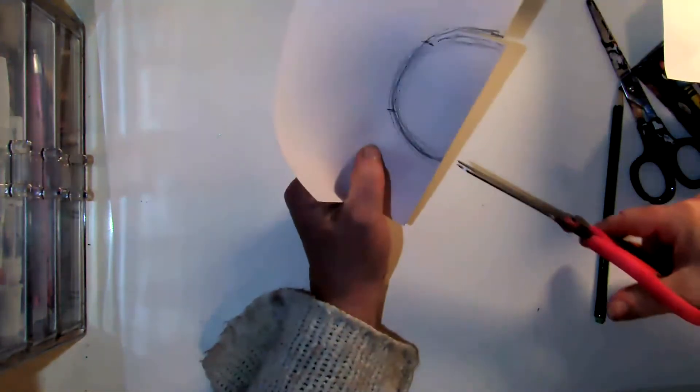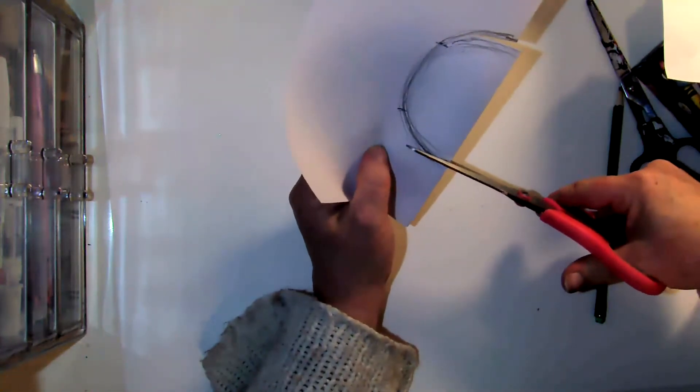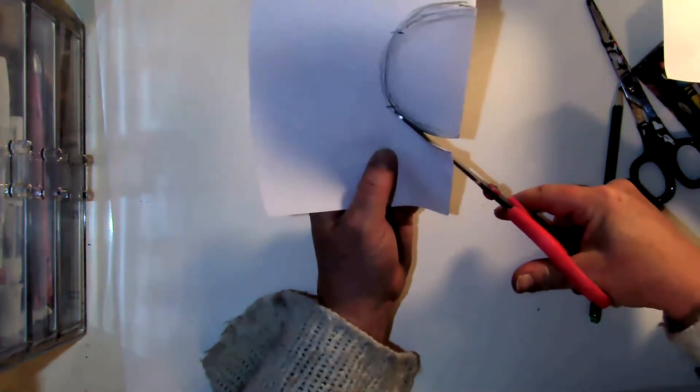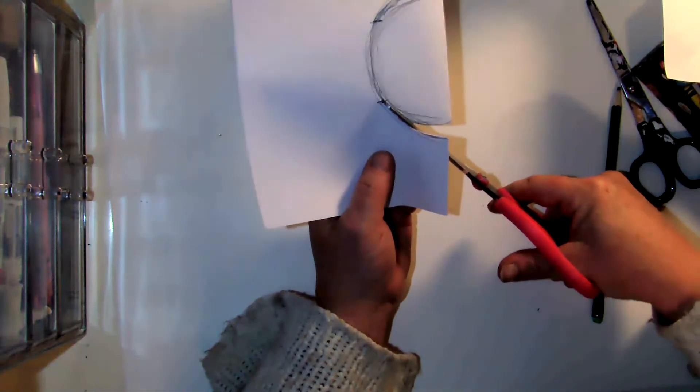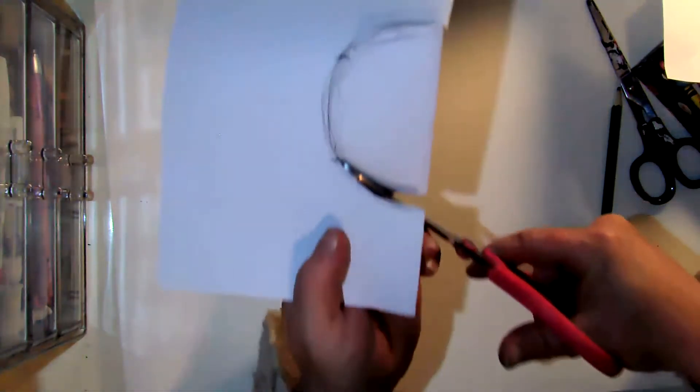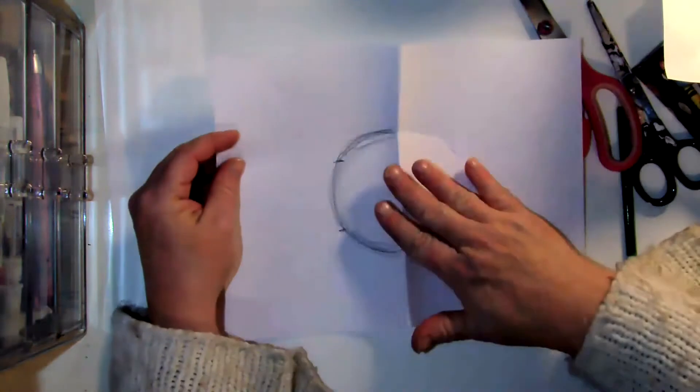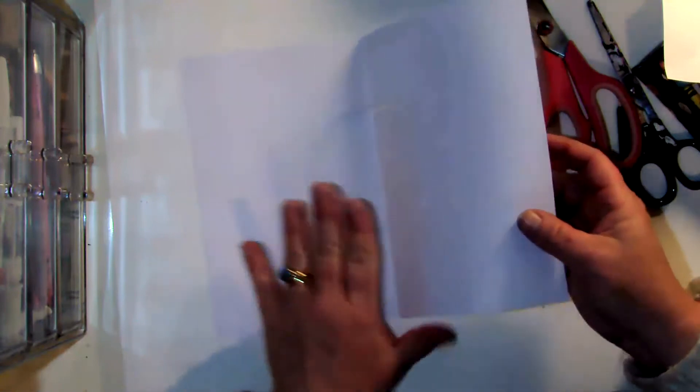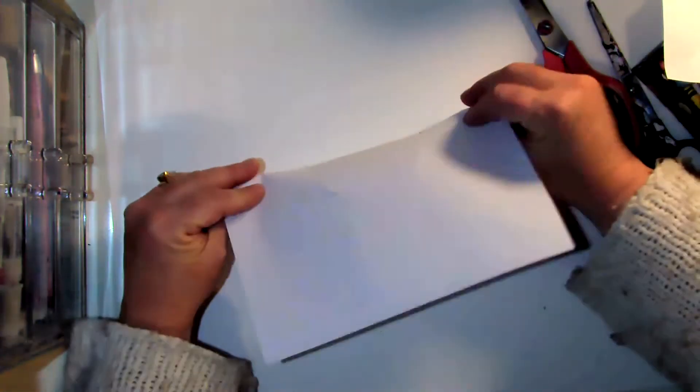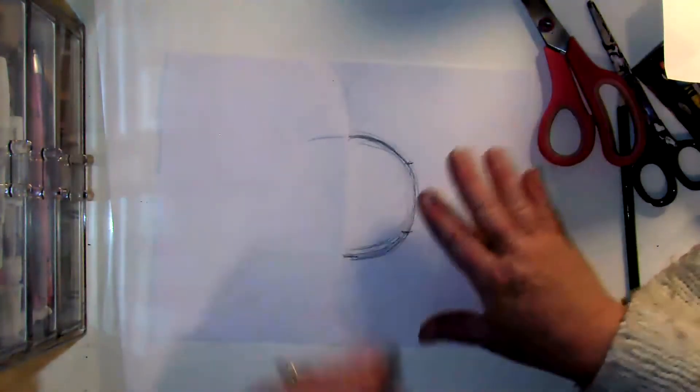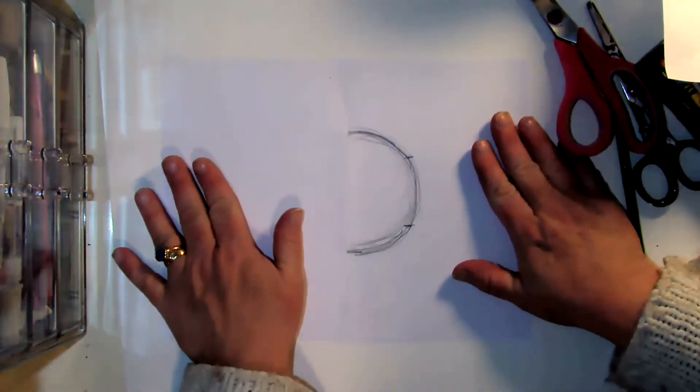We're not going all the way around. We're going nice and slow, open, shut them, open, shut them, and stop at your little line. You see how I did that? So I'm leaving all of this attached, and what we're going to do is then we're going to open it up, and we're going to turn it to the other side. And what we're going to do is we're going to fold it.